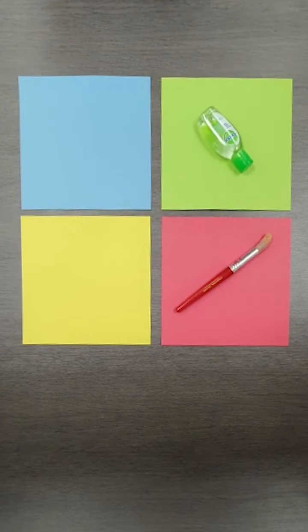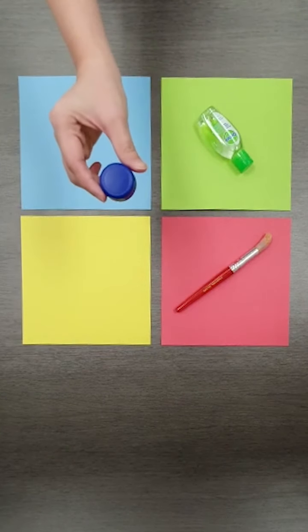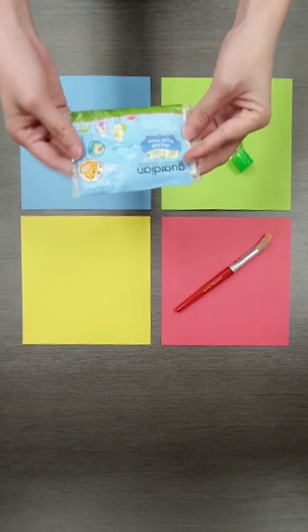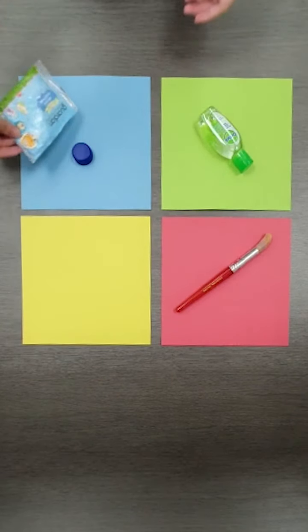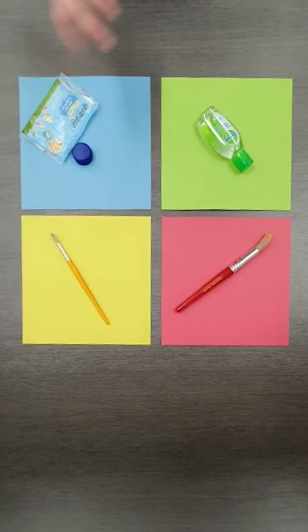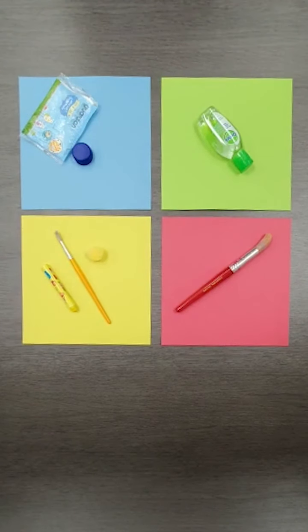So let them continue, maybe you got a bottle cap from the kitchen, put it down. You got a packet of tissue and it's the colour blue so put it over here.